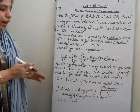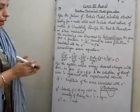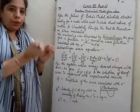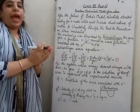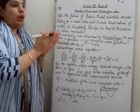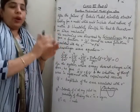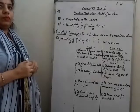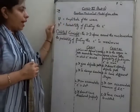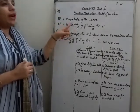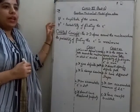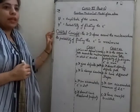The region around the nucleus where the probability of finding the electron is maximum is termed as an orbital. The significance of psi is that it gives us the amplitude of the wave, and psi² gives us the probability of finding the electron. The region around the nucleus where the probability of finding the electron is maximum is termed as an orbital.